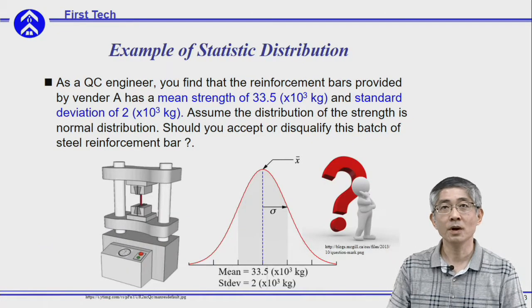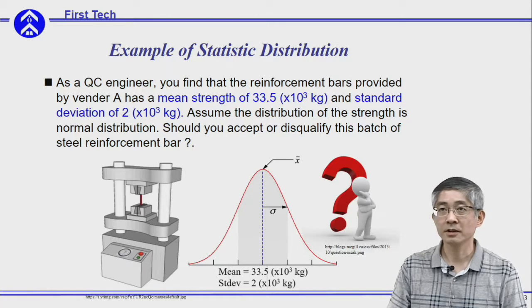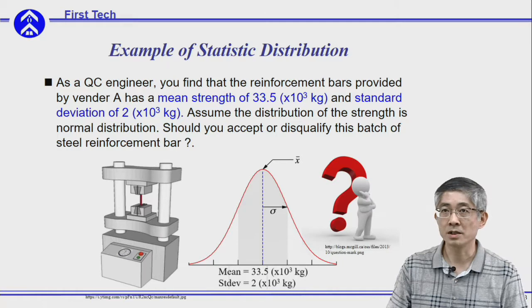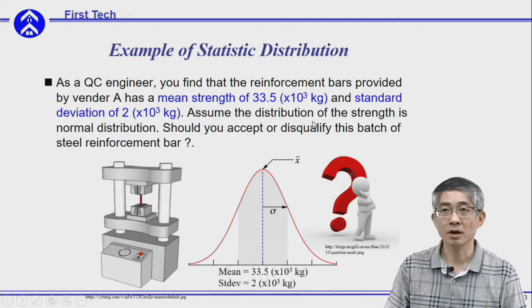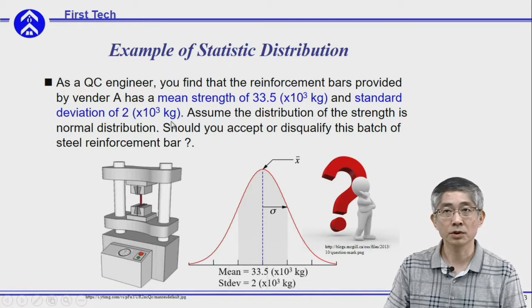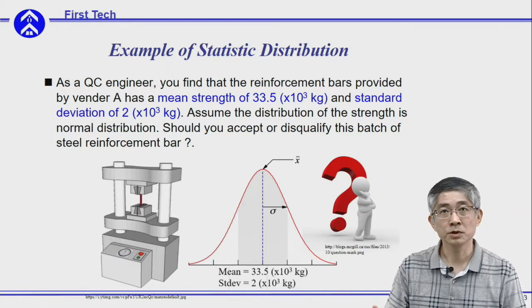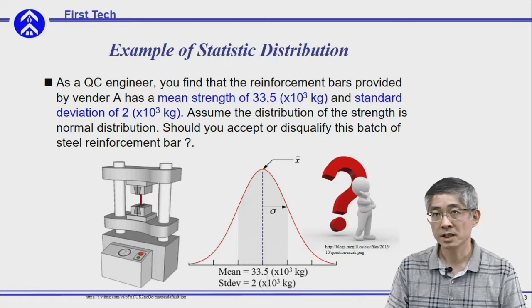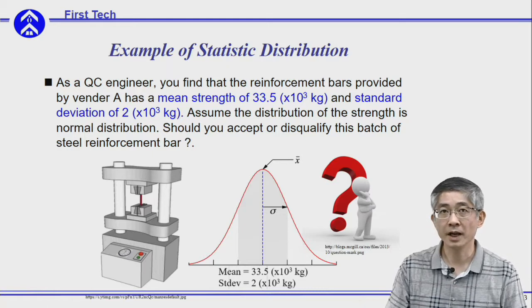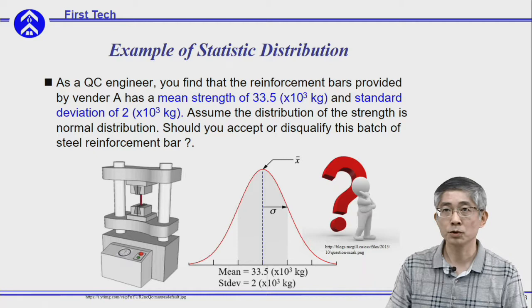Assume you are a quality control engineer who needs to evaluate Vendor A, who provides a batch of reinforcement bars with a mean strength of 33,500 kilograms and a standard deviation of 2,000 kilograms. The strength distribution is assumed to be normal, and you need to determine whether samples from Vendor A are qualified for your requirement.